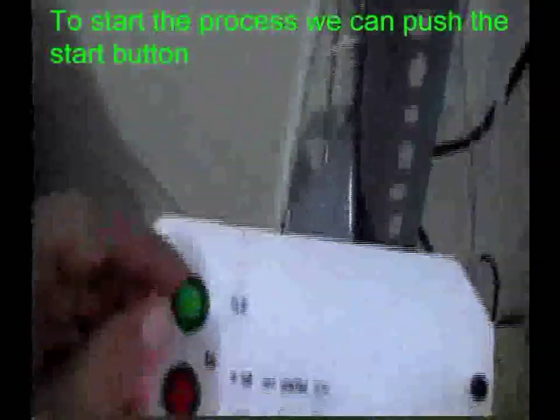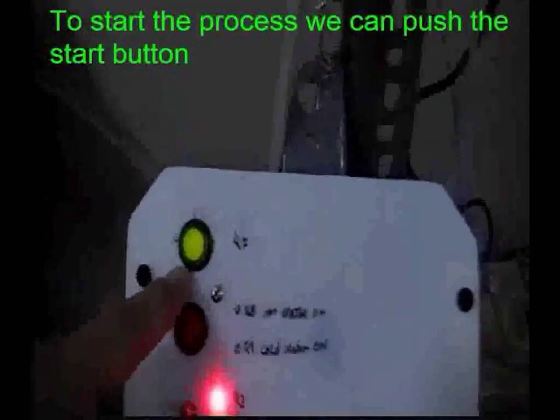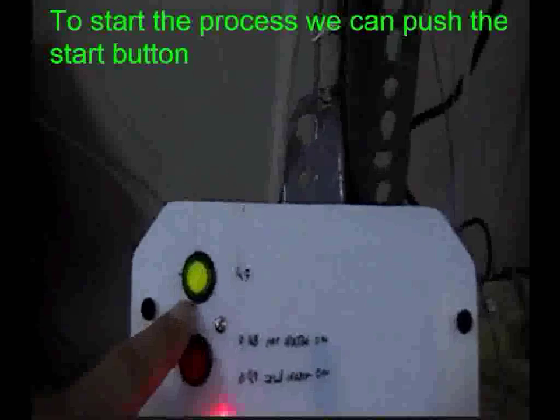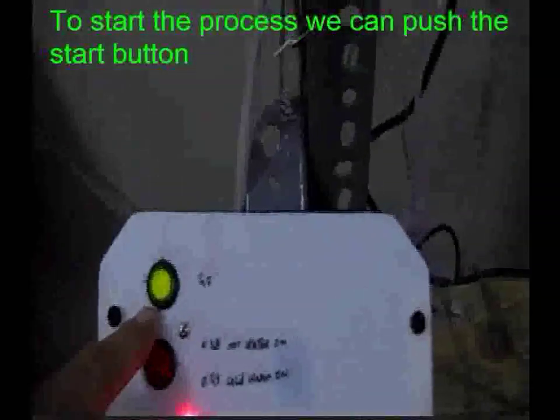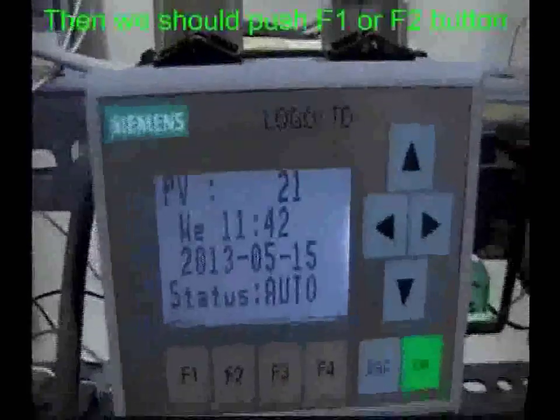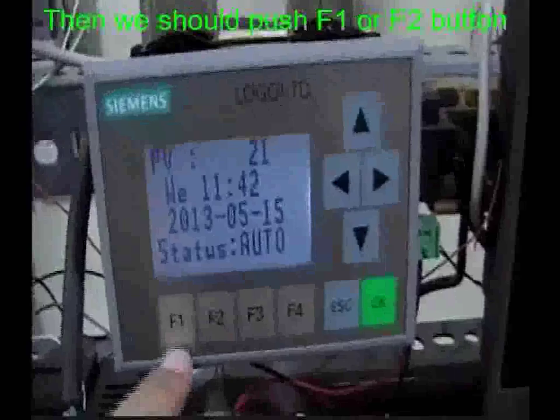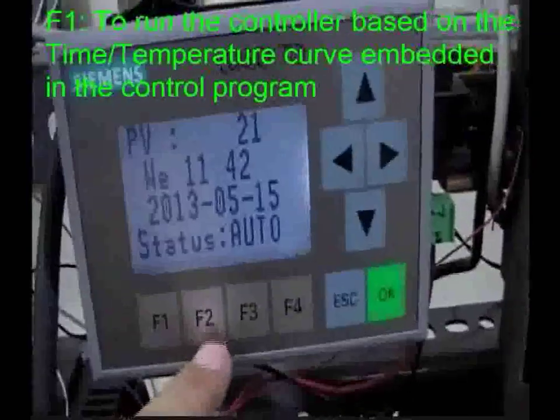Simply, to start the process, we can push the start button. The light inside the button turns on. That means right now the system has started and the backlight is on. In this case, the system is waiting for the operator to either push function 1 or function 2.